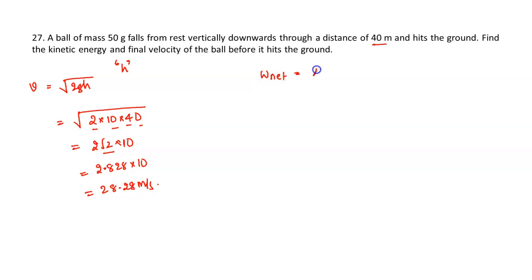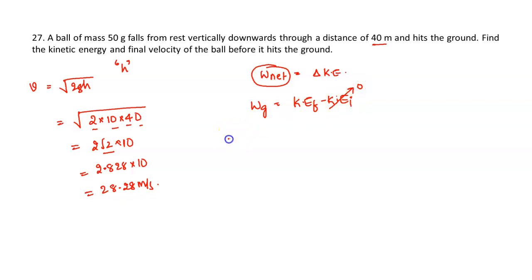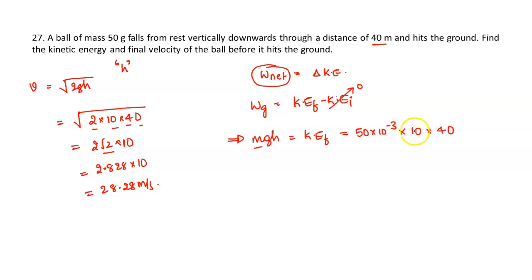Work done by gravity = mgh = KE_final (since initial KE = 0). Substituting: m = 50 g = 50 × 10⁻³ kg, g = 10, h = 40. So KE = 50 × 10⁻³ × 10 × 40 = 20 joules. This is the solution.